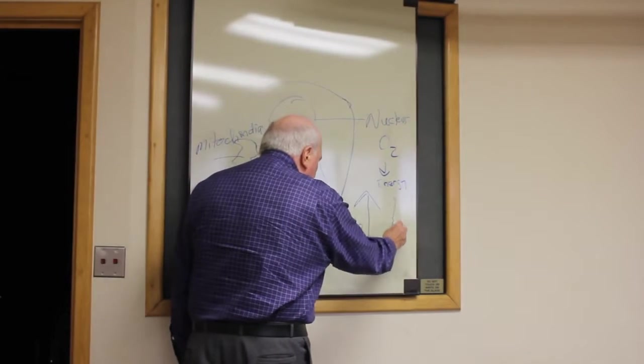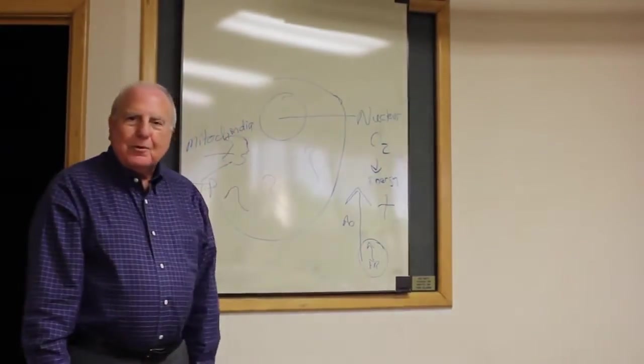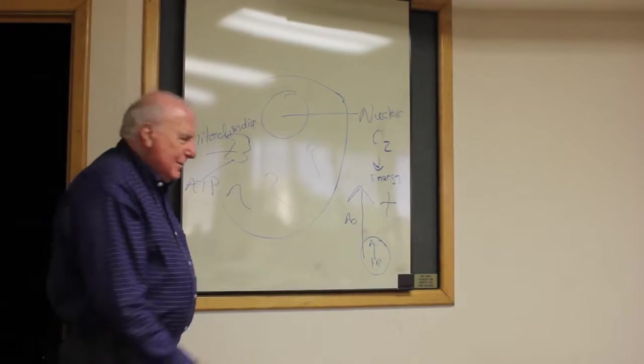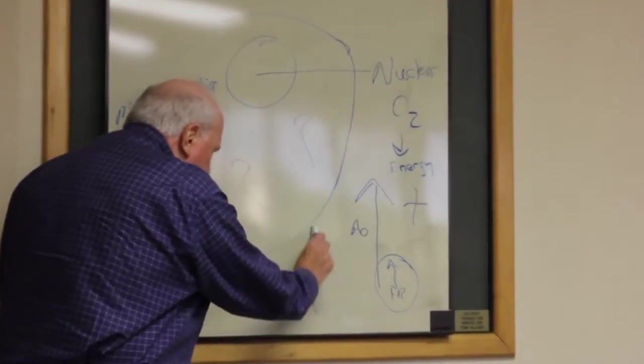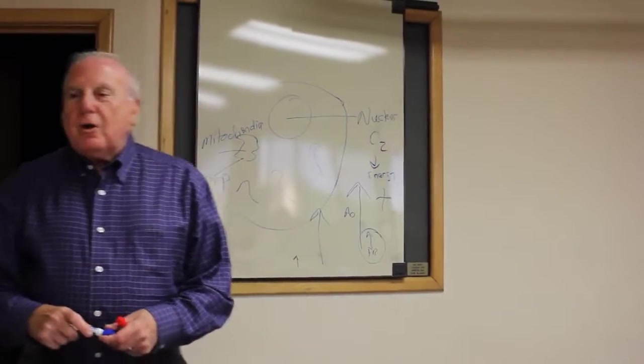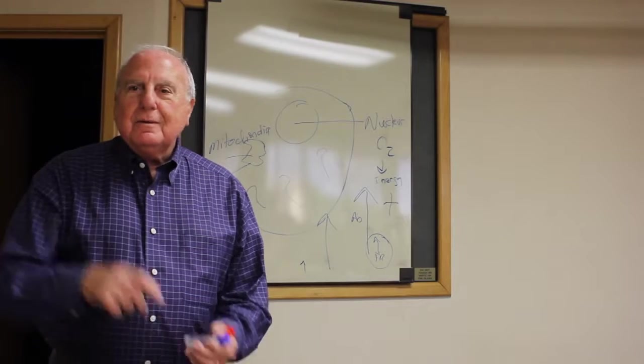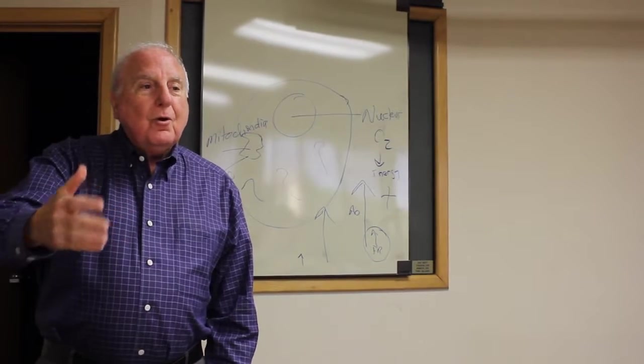So we end up when we're 30, 35 or so, with this many antioxidants and this many free radicals. That's called oxidative stress: the excess production of free radicals over your ability to neutralize them with antioxidants.